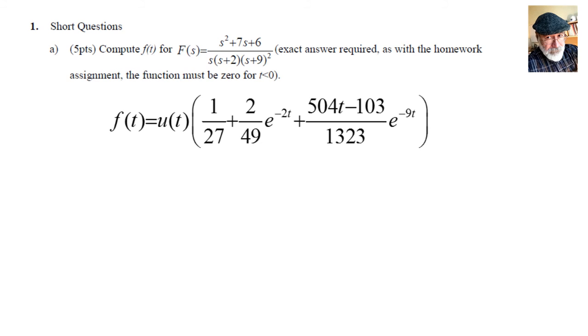And in the paper copy, make sure that you add the u(t) to ensure that this function is 0 for t less than 0. And that is this part of the question. Let's move on.